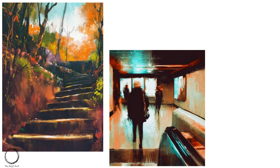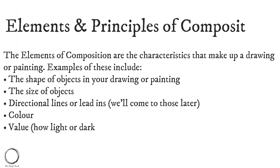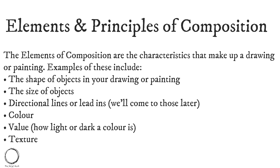After the video, come back to the example images and apply the elements and principles of composition which we are going to learn. The elements of composition are the characteristics that make up a drawing or painting. These include: the shape of objects, the size of objects, directional lines or lead-ins, color, value (how dark or light a color is), and texture.